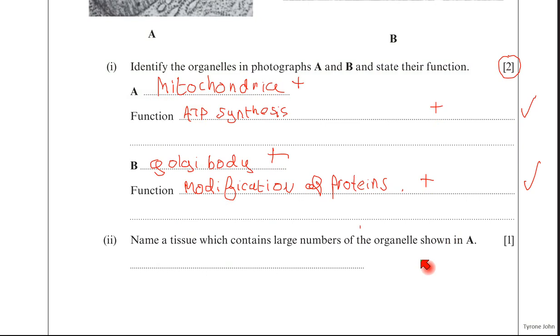Right, the next one. Name a tissue which contains large numbers of organelle A. They would have allowed liver, muscle, nervous tissue there. So any one of those would have been fine. I think I also gave the mark for the pancreas, but it is best to stick to either liver, muscle or nervous tissue.